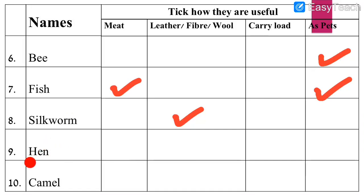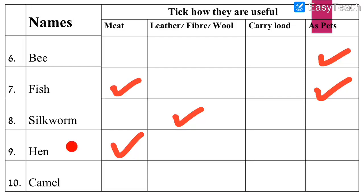Number 9: Hen. Hen gives us eggs. Do we get meat from hen? Yes, we get meat from hen. Can we get leather, fiber, or wool from hen? No, we cannot — no tick mark. Can hen help us carry load? No, hen cannot carry load for us. Can we keep hen as our pet? No, we cannot keep hen as a pet.